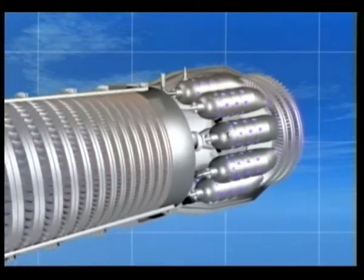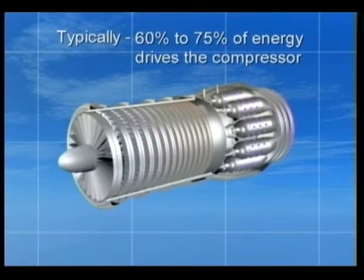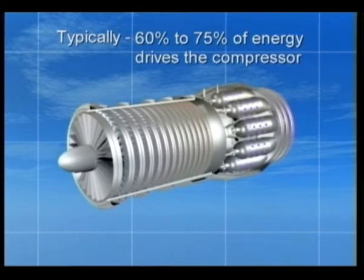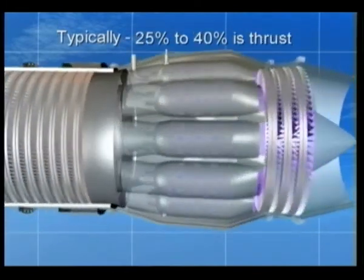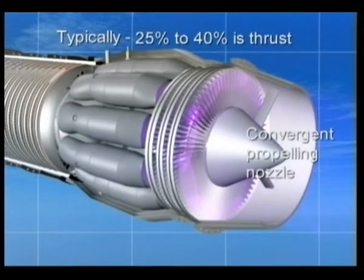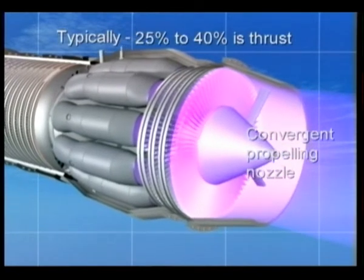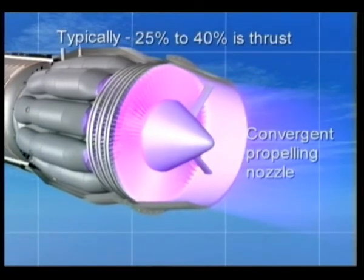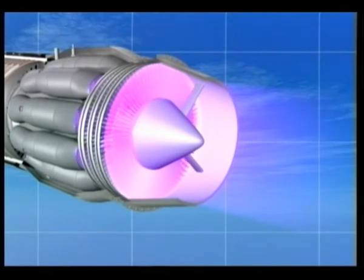Of the total energy, approximately 60% is used driving the compressor, so that there is a considerable drop in gas pressure and temperature across the turbine. The remaining 40% of the energy after driving the turbine and the compressor is used to form a high-speed jet which has a substantial residual pressure.